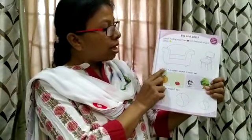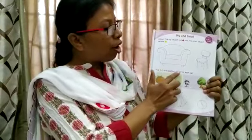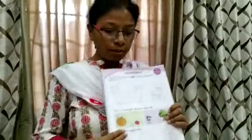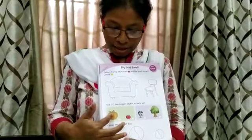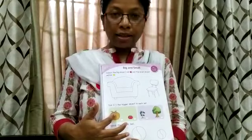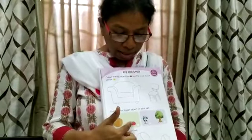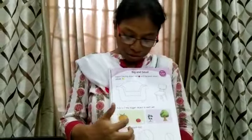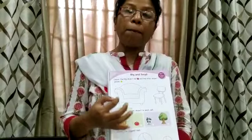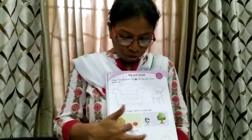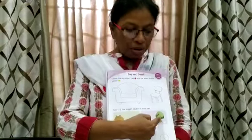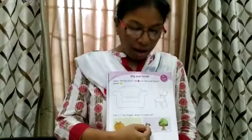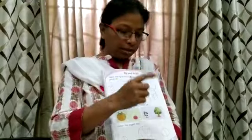Now, take the bigger object in each set and tick it. Which one is big? The pumpkin is big and the tomato is small, so you only have to tick the bigger object — don't tick both, only the big one. For tree and plant, whichever is the bigger one, you put a tick.